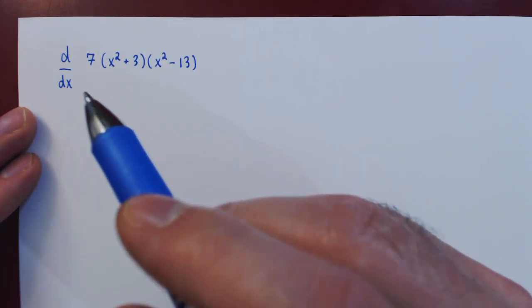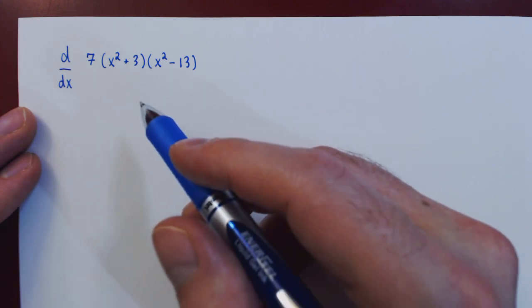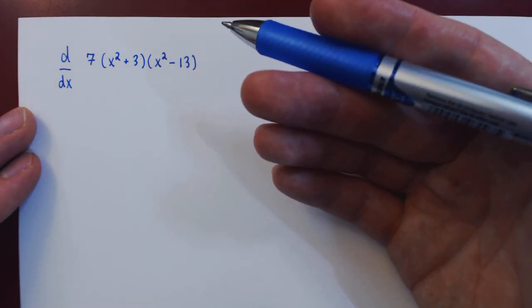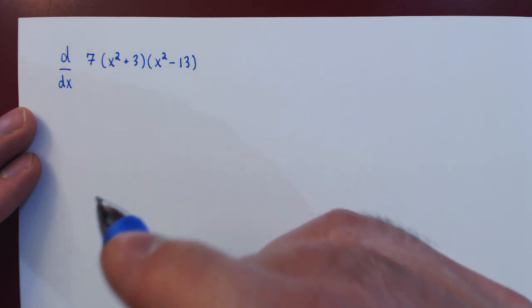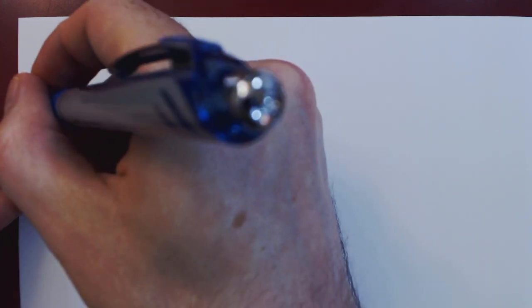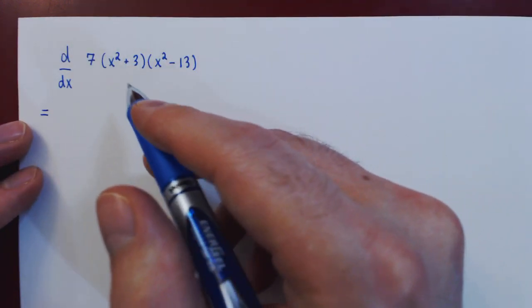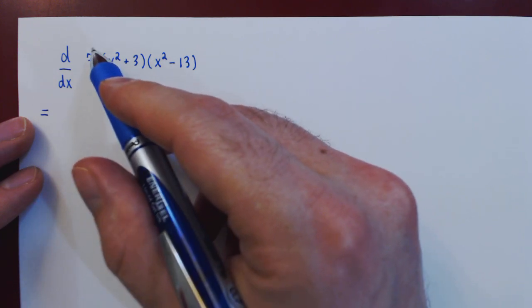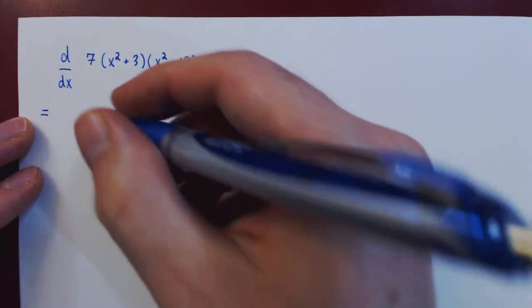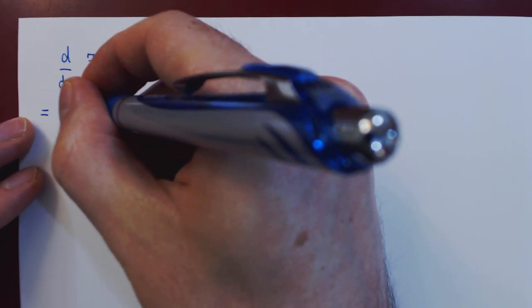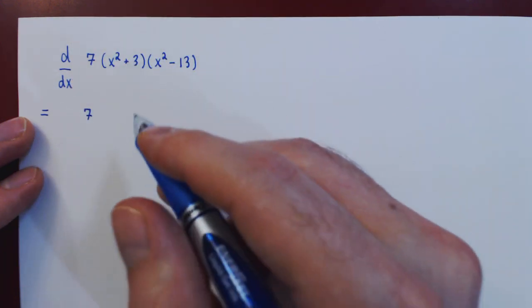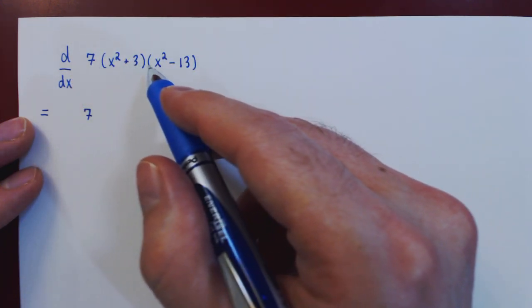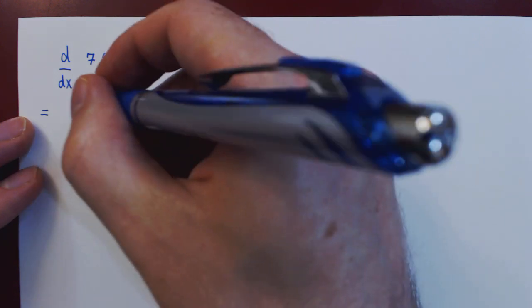So let's see what comes out here. Now seven is a constant multiple, so we know that seven will simply stay where it is when we differentiate, and then times the derivative of the remaining product. So we apply the product rule which says...